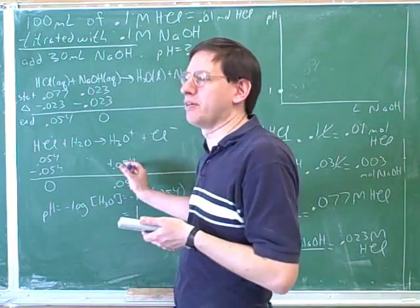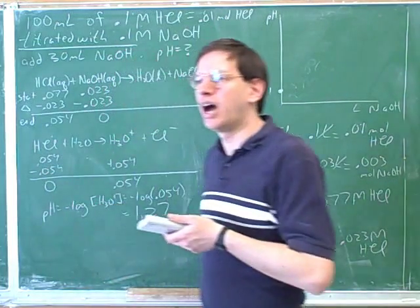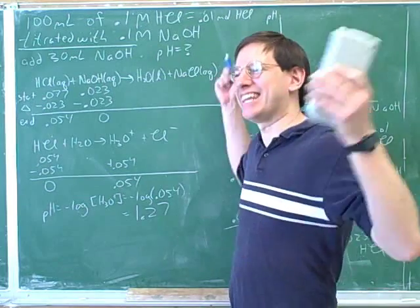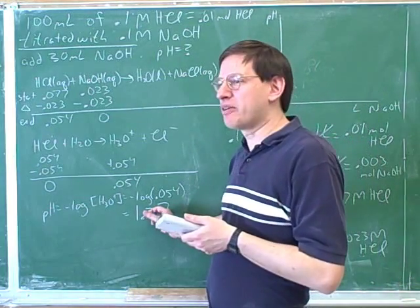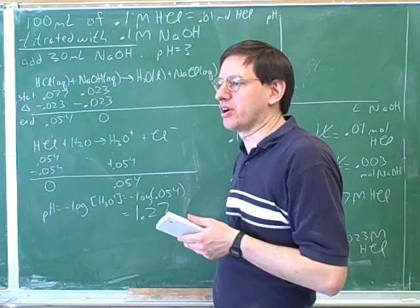We're all getting slightly different answers because we're rounding a little bit differently. I got 1.27 as well. So that's the final pH? That's the final pH. That's the end. That's all there is to it. Alright, so that would be the pH in this case, absence of rounding error.